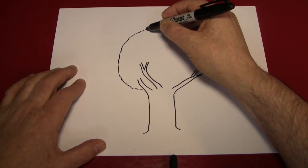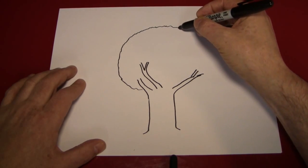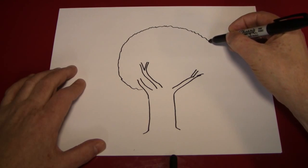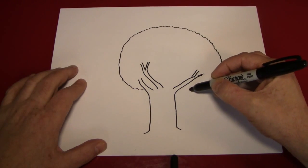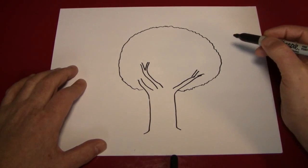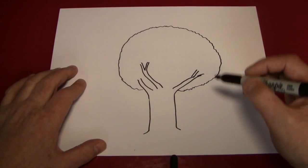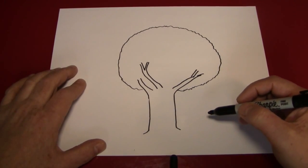And honestly, it doesn't really matter how even or uneven it is. It's supposed to represent the edges of leaves. And we're almost there. It's already starting to look like a tree.